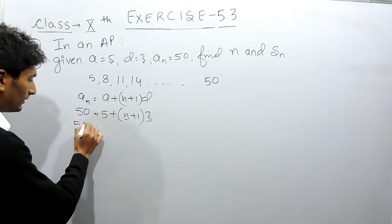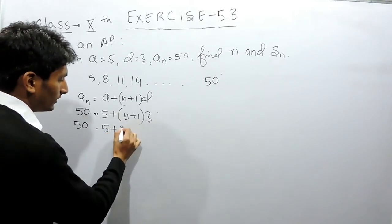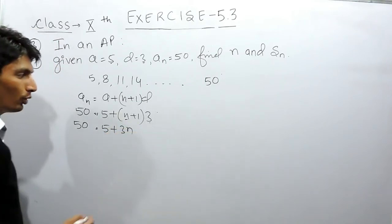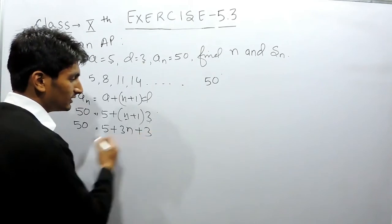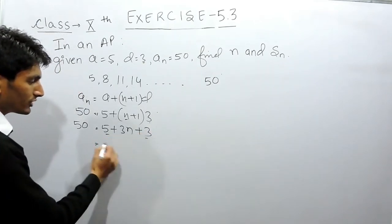So this is 50, this is 5, opening this bracket, this 3 will multiply with both N as well as with 1. Now these two are constants.